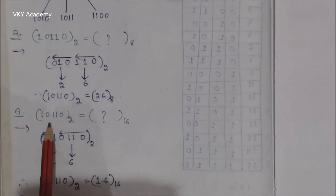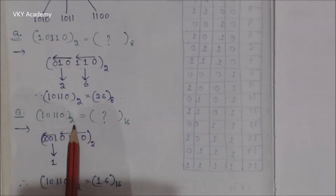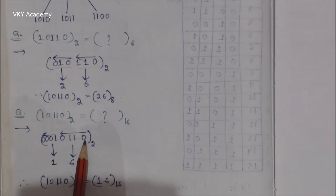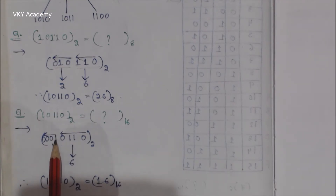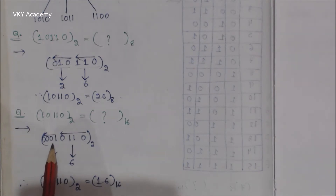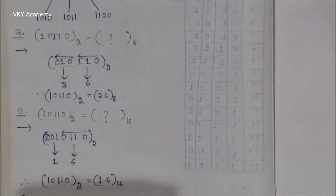Now let us convert the same binary 10110 (base 2) into hexadecimal. For hexadecimal we take a group of 4 bits. Starting from the LSB, count 4 bits: 0110. For the remaining bits on the left I pad zeros to get 0001, giving 4 bits. The equivalent hexadecimal for 0001 is 1 and for 0110 is 6. So the hexadecimal number is 16 (base 16).